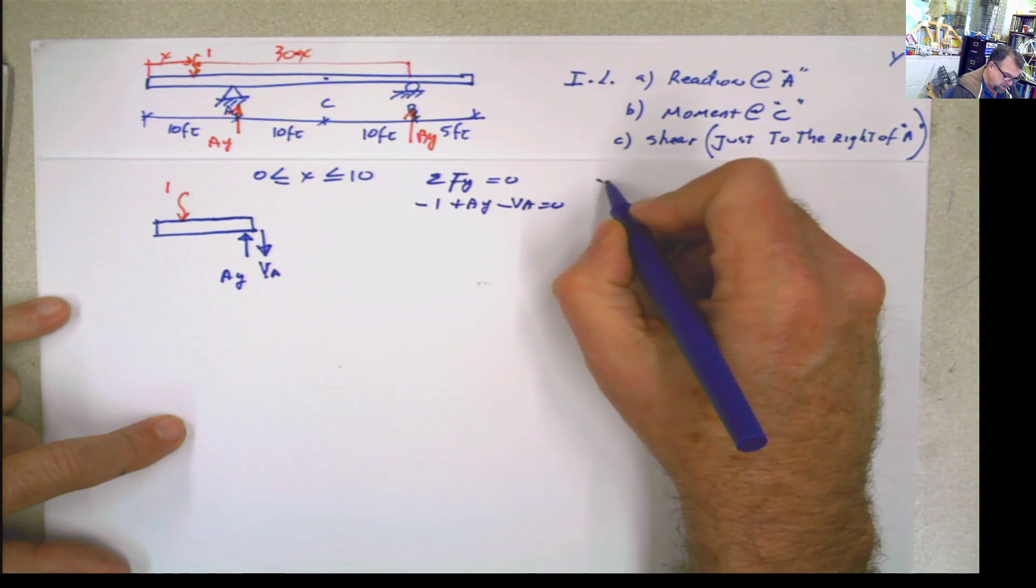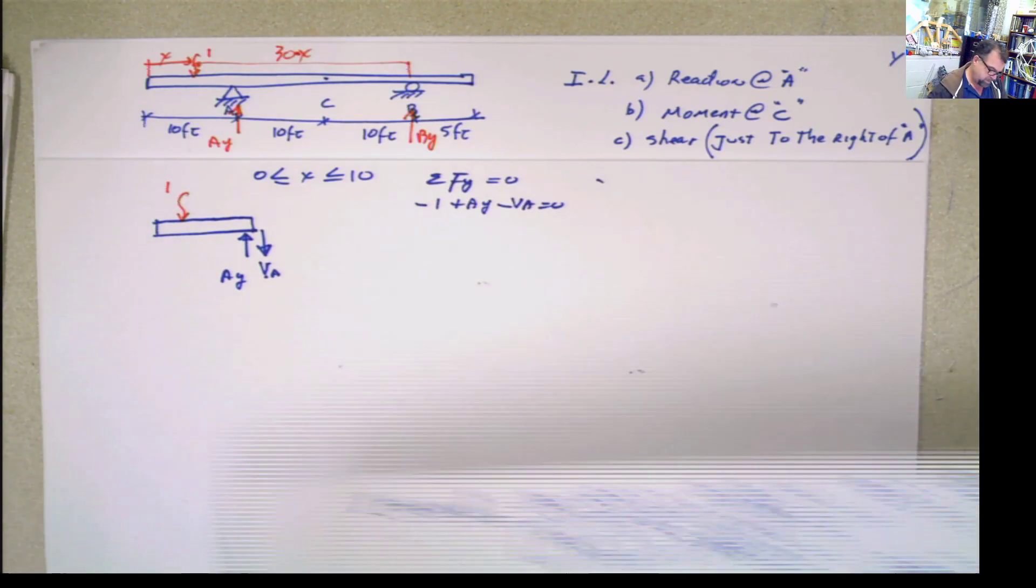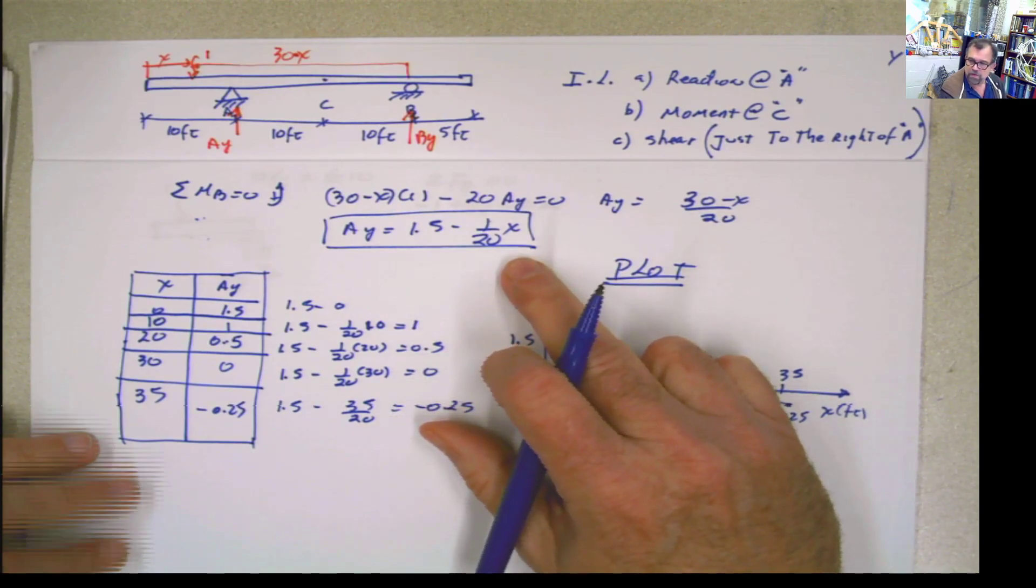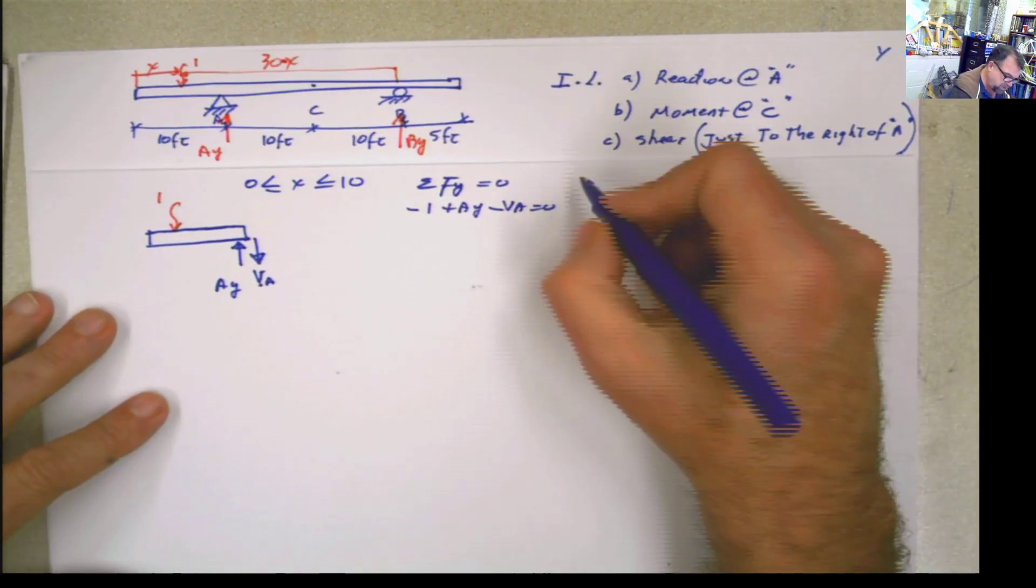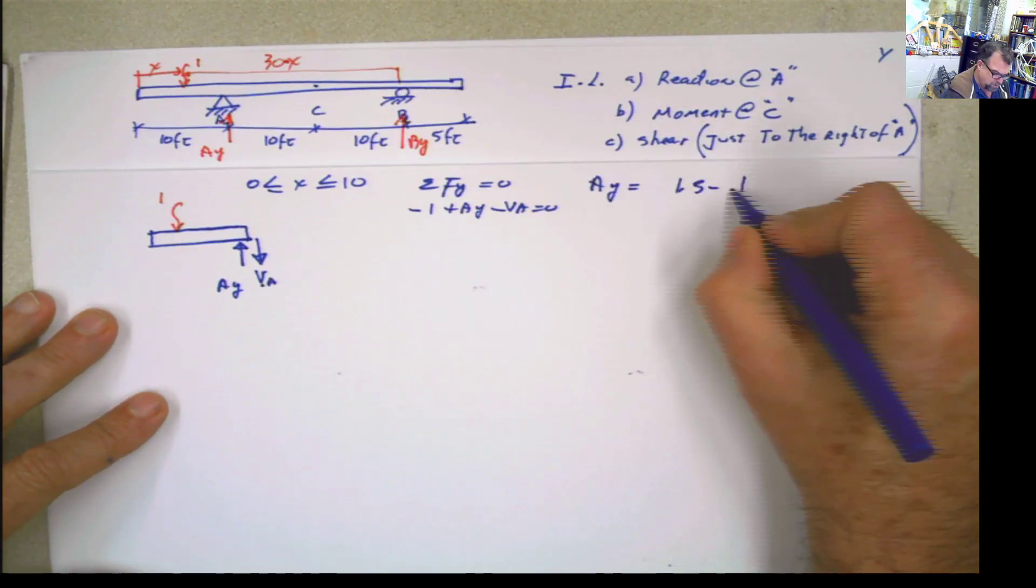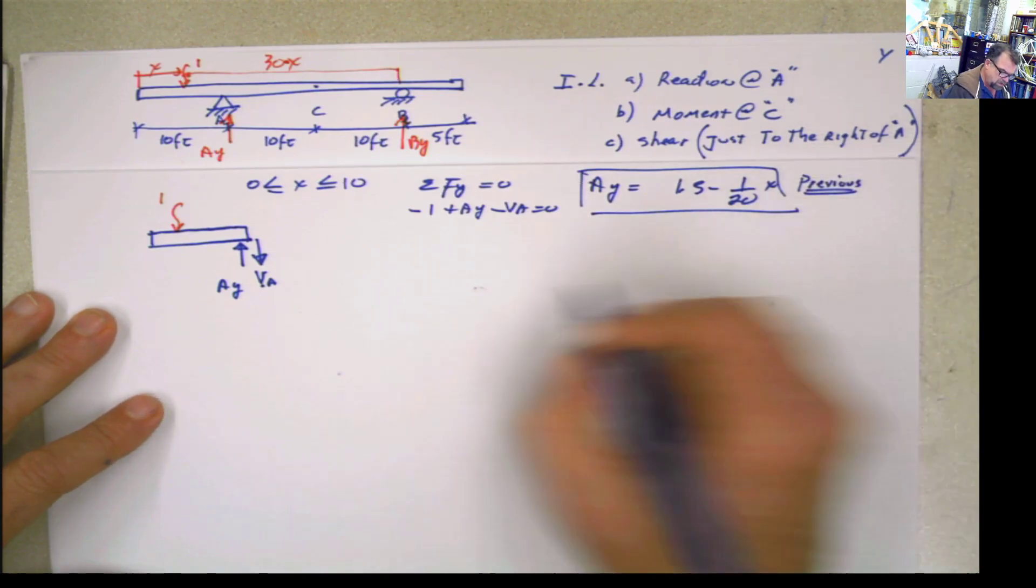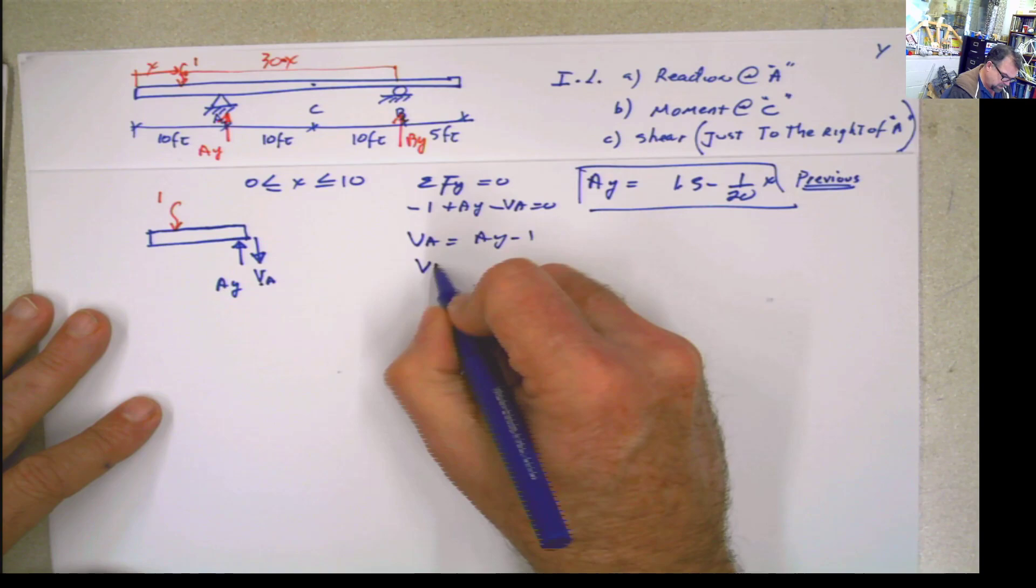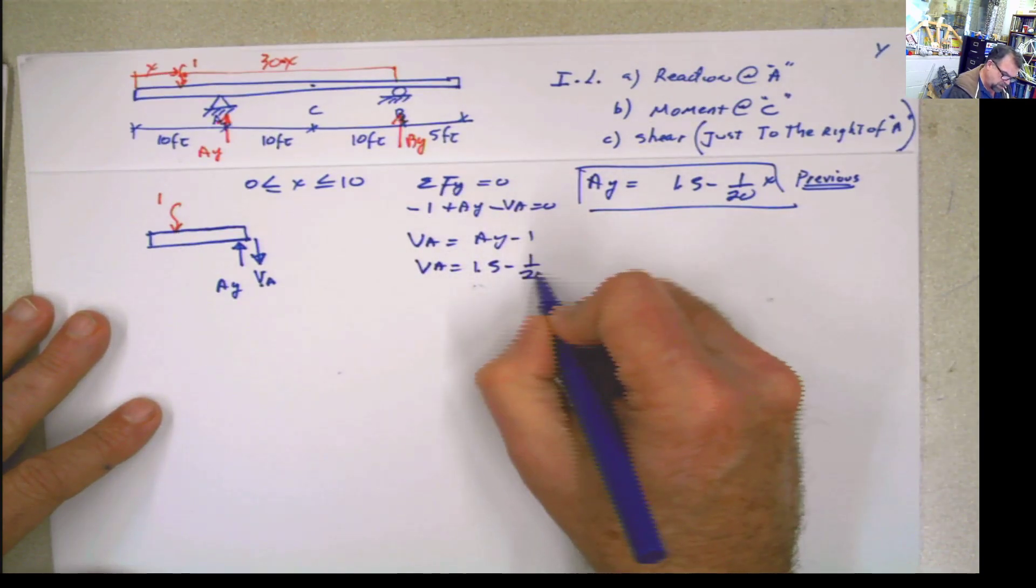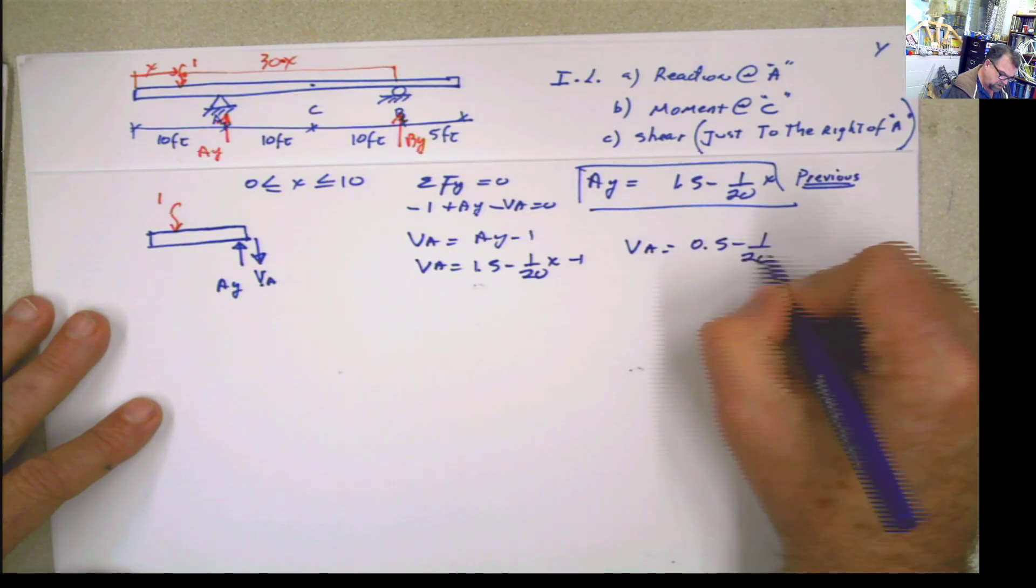However, from the previous, the first part of this problem, we calculated Ay as 1.5 minus 1 over 20x. We can do it again, but why am I going to do it if I already did it? 1.5 minus 1 over 20x. This is Ay from previous calculation. So Va is going to be equal to Ay minus 1, or Va is going to be 1.5 minus 1 over 20x minus 1, or Va is going to be equal to 0.5 minus 1 over 20x. There you go.